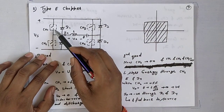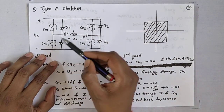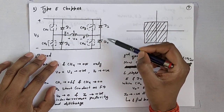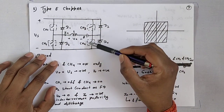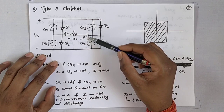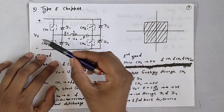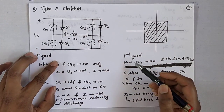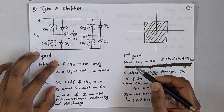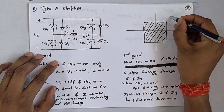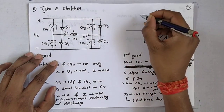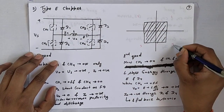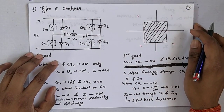The circuit contains CH1, CH2, D1, D2, D3, D4, CH3, and CH4. There is also an inductor L and source voltage VS. We will now explain the operation quadrant by quadrant: first quadrant, second quadrant, third quadrant, and fourth quadrant, examining what happens in each quadrant.